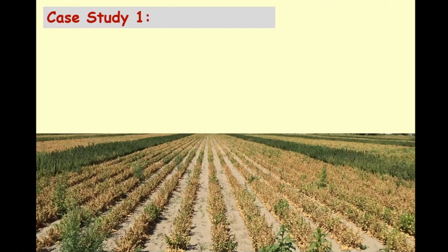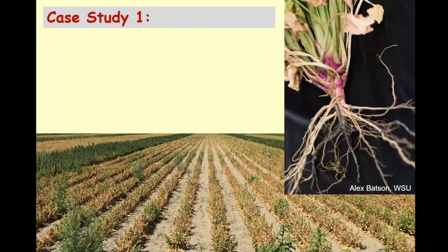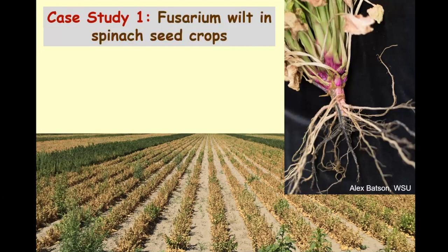I'm going to go through some case studies to help drive home some important principles. This is a picture I took in a spinach seed crop here in western Washington — it's a hybrid seed crop with male and female lines, a dioecious species with separate male and female plants. The broad areas of dying plants are plants that are dying because of disease. These photos show symptoms on the roots — healthy roots should be a nice white to pink color, but you can see some very blackened roots illustrating how the fungus gets from the soil, moves into the root hairs and roots, gets into the vascular tissue, then moves up into the main tap root and up the plant.